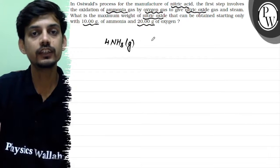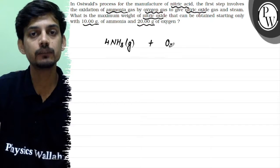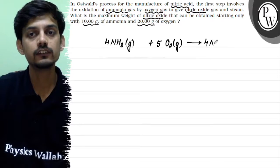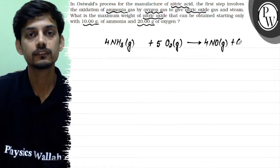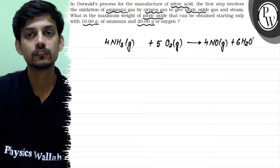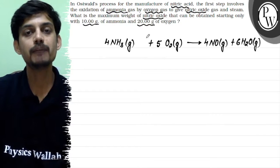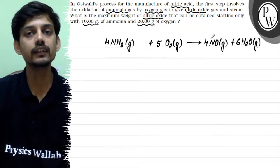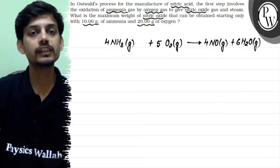So the balanced equation will be 4 NH3 gas plus 5 O2 gas gives 4 NO gas plus 6 H2O. This is the balanced reaction where ammonia is oxidized to nitric oxide, and then in a further step nitric acid will be prepared. So let us see the stoichiometry.